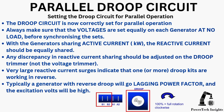Setting the droop circuit for parallel operation — the droop circuit is now correctly set for parallel operation. Always make sure that the voltages are set equally on each generator at no load before synchronizing the sets. With the generator sharing active current, the reactive current should be equally shared. Any discrepancy in reactive current sharing should be adjusted on the droop trimmer, not the voltage trimmer. Very large reactive current surges indicate that one or more droop kits are working in reverse. Typically, a generator with reverse droop will go to lagging power factor and the excitation volts will be high.